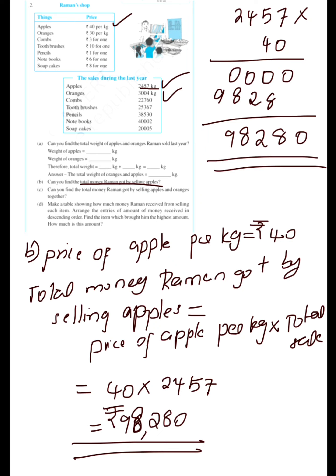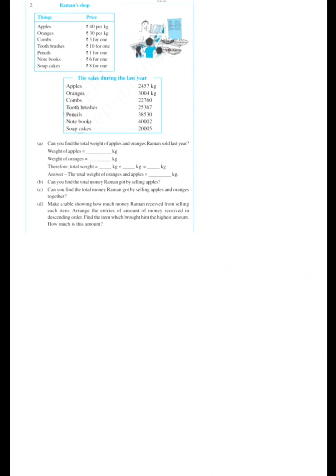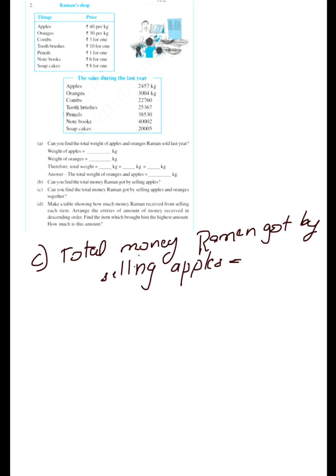98,280 rupees is the answer for part B. You need to multiply the price of apple per kg into total sale. Now let's see part C. From the previous question we already found the total money Ramen got by selling apples: 98,280 rupees.